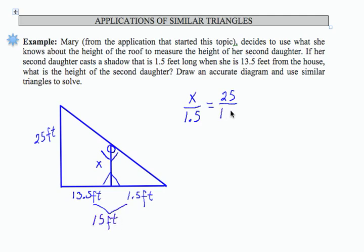So here's the proportion I can use to solve the problem. If I do a cross product here, I get 25 times 1.5 divided by 15. If I perform that multiplication, 25 times 1.5 divided by 15, I get 2.5, and this is in feet, of course.